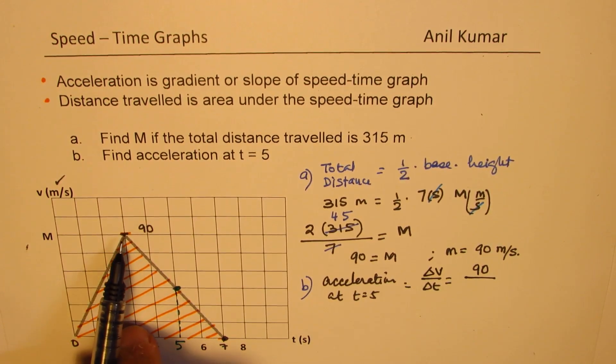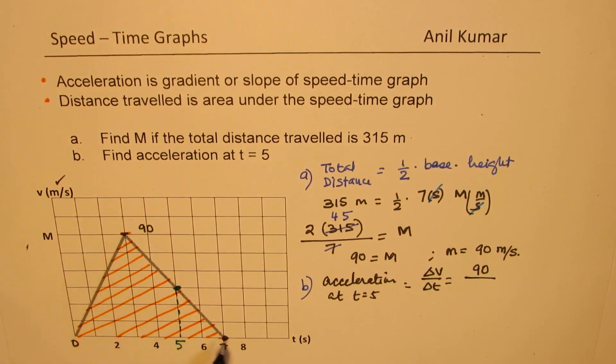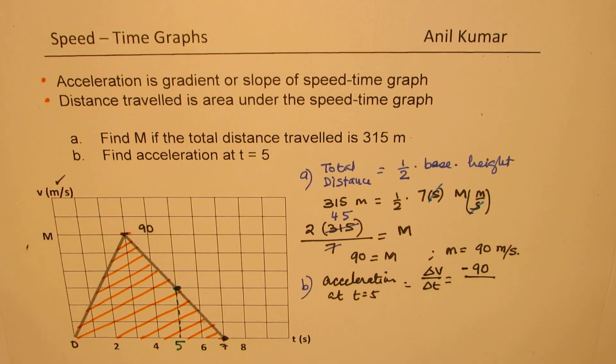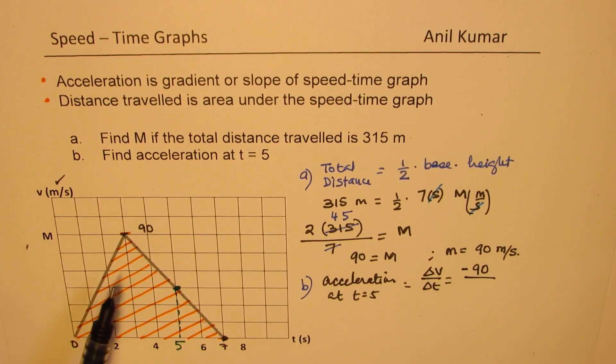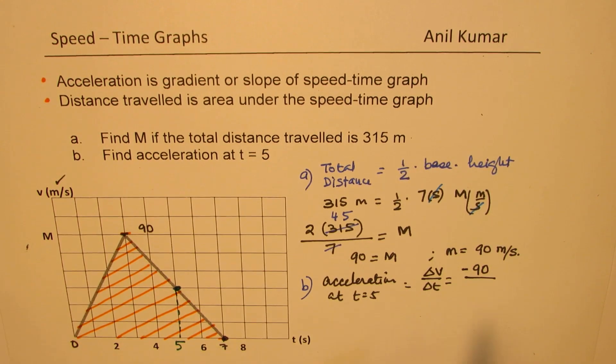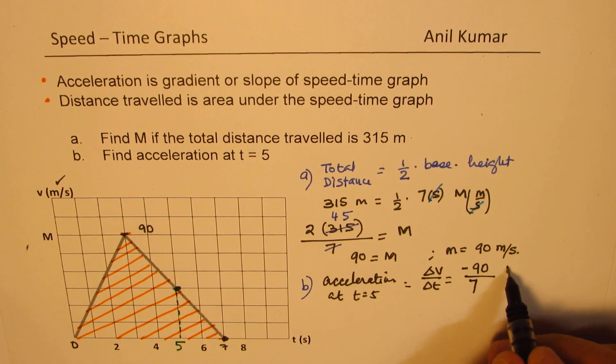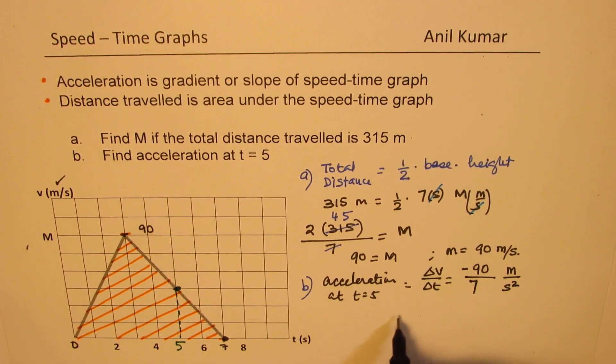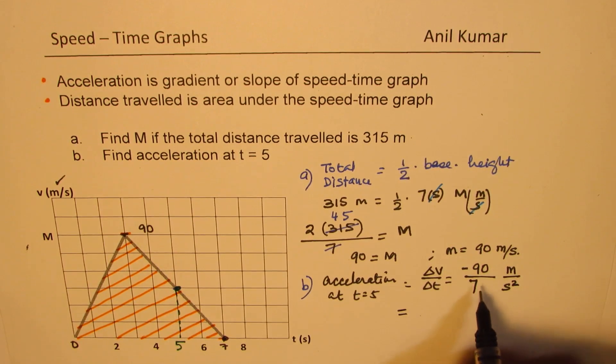However, it actually comes down, you see, 90 to 0. So it should be negative, right? Since it is actually decreasing from 90 to 0. And as far as time is concerned, it increases from 0 to 7. So it is 7. So that becomes the acceleration. It is negative. Units should be meters per second squared. So which is equal to, dividing by 7, we get negative.